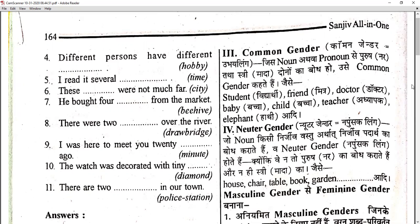Now we come to the neuter gender. Neuter gender is what we call napunsak ling in Hindi. These are used for lifeless products or non-living things, because they are neither male nor female. Examples of non-living things: house, chair, table, book, garden, etc. All these are neuter genders.